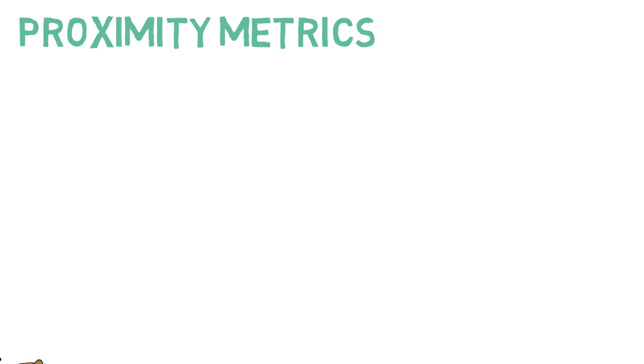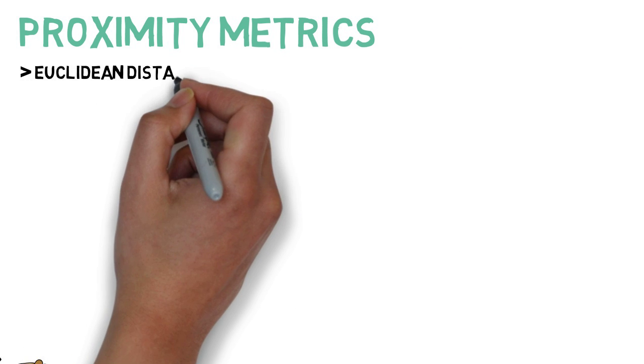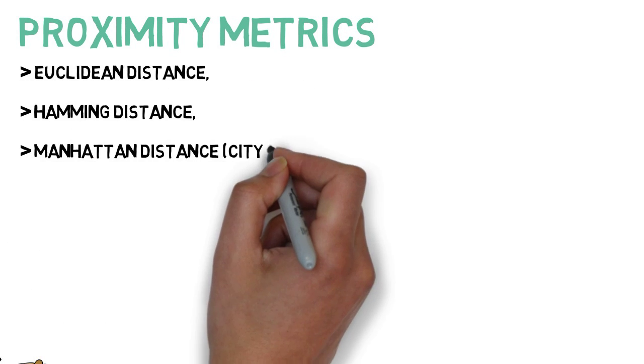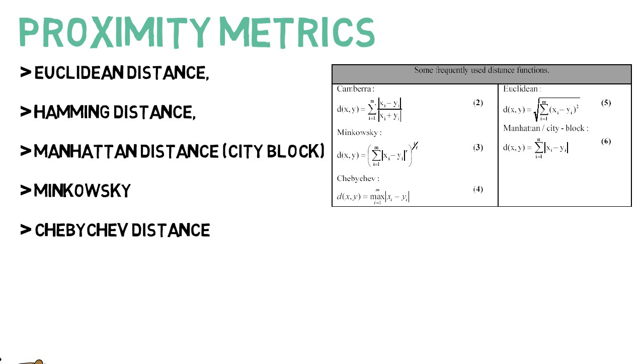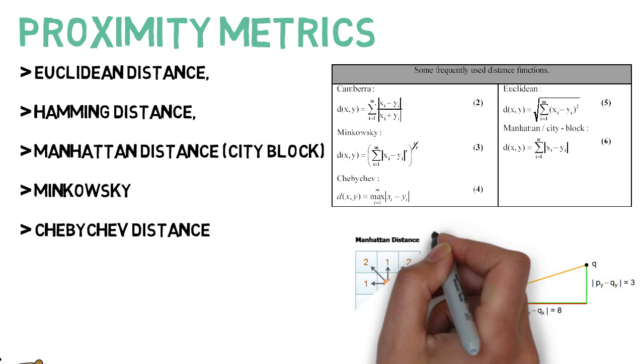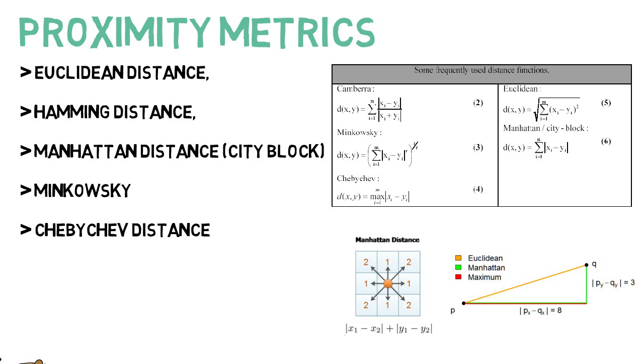Proximity Metrics: mostly Euclidean distance is used for KNN, but you can use other distance metrics such as Hamming distance, Manhattan distance also known as Cityblock, Minkowski, and Chebyshev distance amongst others.